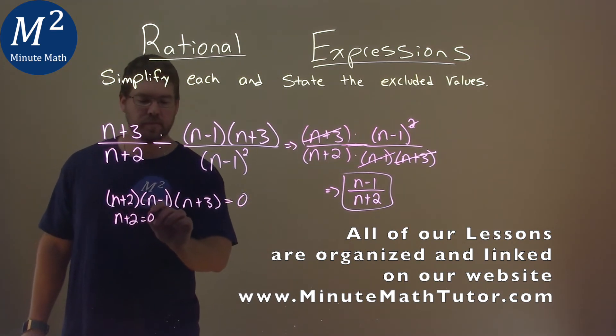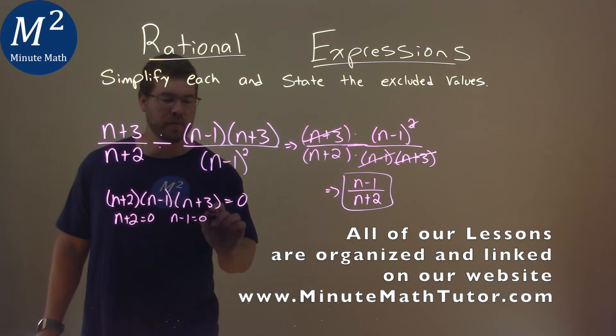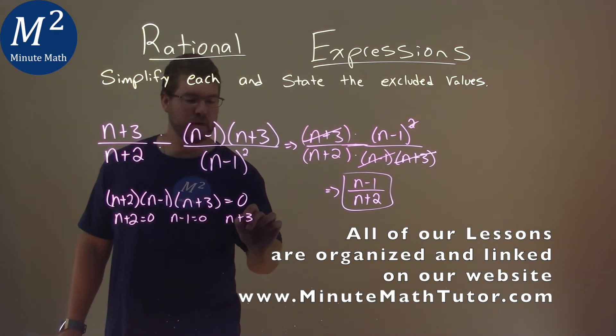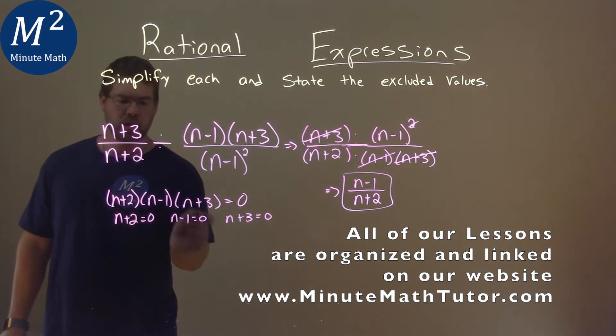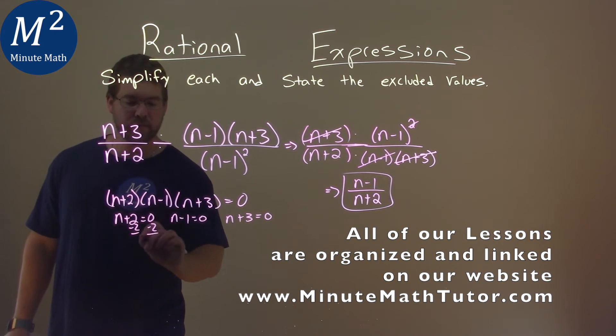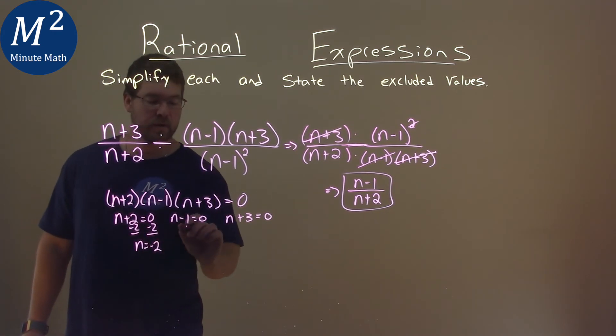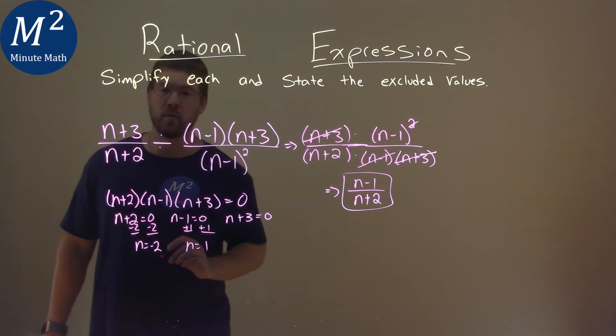So n plus 2 equals 0, n minus 1 equals 0, and n plus 3 equals 0. We subtract the 2 to both sides, and n equals a negative 2. Add a 1 to both sides, and n equals a positive 1.